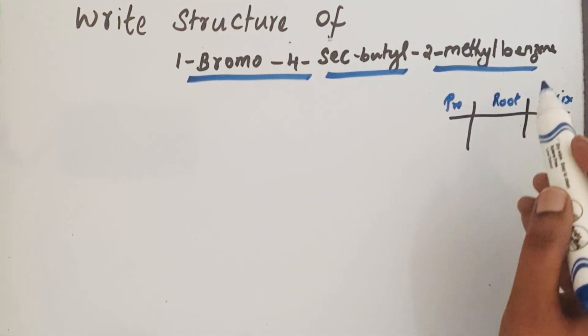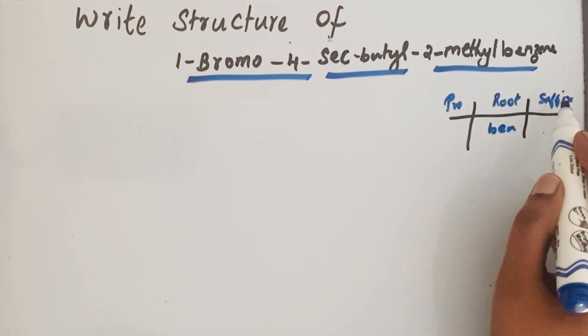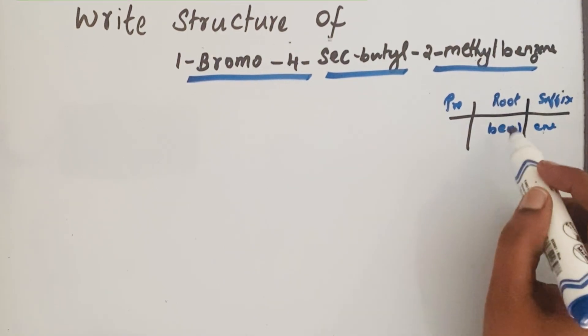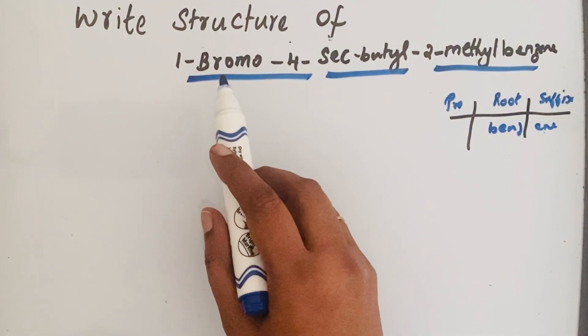Here in the root, we have benzene, so benz and the suffix is ene. Benz and ene, that means double bond, alternate double bond is present in the benzene.